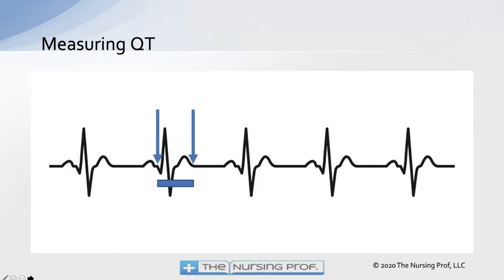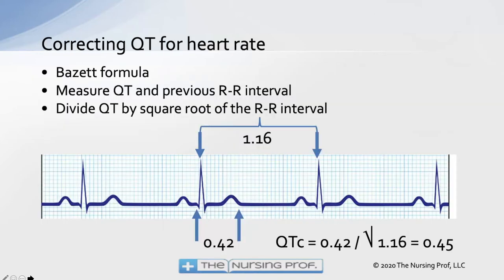You may or may not be measuring the QT interval in your institution depending on what unit you work on. Measuring the QT from the beginning of the Q to the end of the T — if that prolongs, we have a longer relative refractory period and the patient could have an impulse fall on that relative refractory period and cause a lethal dysrhythmia.